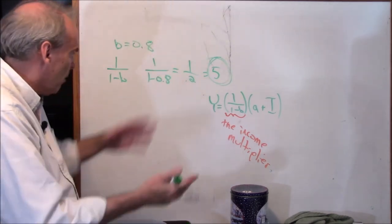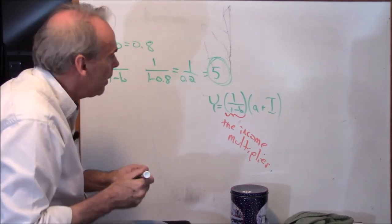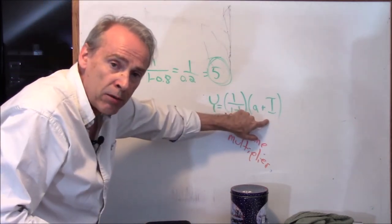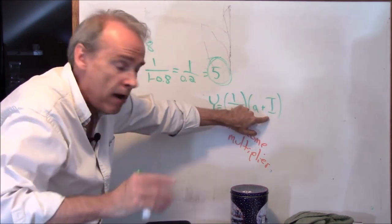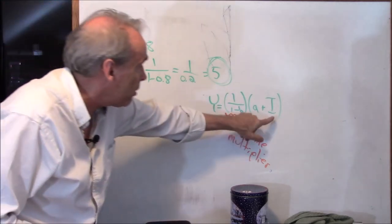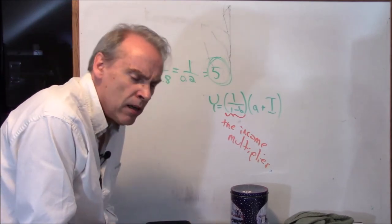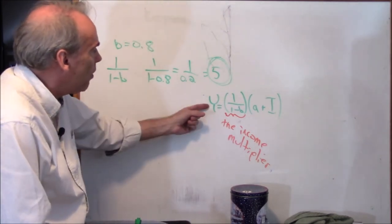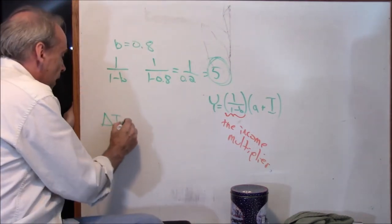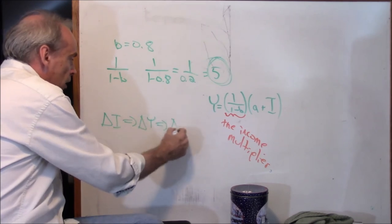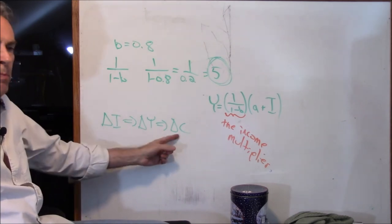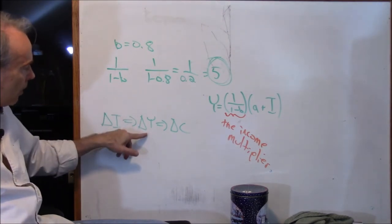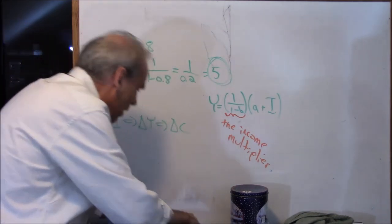Investment is very unstable and so it creates instability in GDP. We rarely see big changes in consumption — consumption tends to follow Y. Changes in investment tend to cause changes in income, which tend to cause the changes in consumption. We don't typically see recessions caused by people stopping spending; we see recessions caused by firms stopping investing — the fall in investment causes the recession, and the recession causes consumption to go down. Anyway, that's just a side point, but I love this stuff.